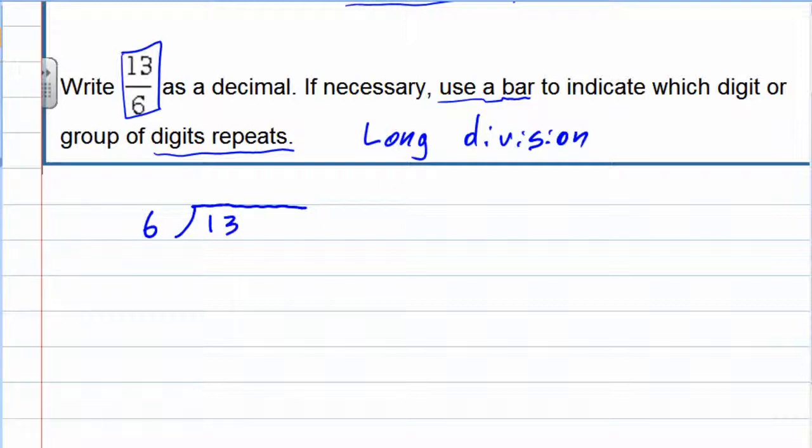And now we can start our long division. So 6 goes into 13 twice. 2 times 6 is 12. That gives us a remainder of 1. But since we're looking at using decimals, we don't want to stop with a remainder. We want to add a decimal and we can add zeros so that we can keep going.